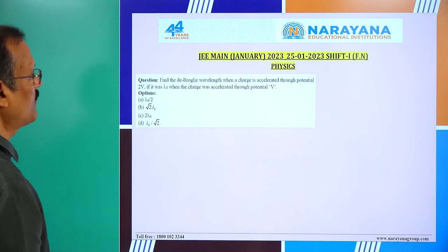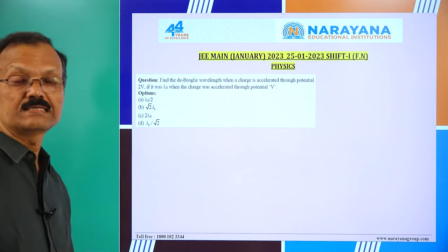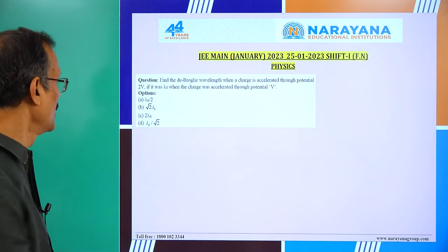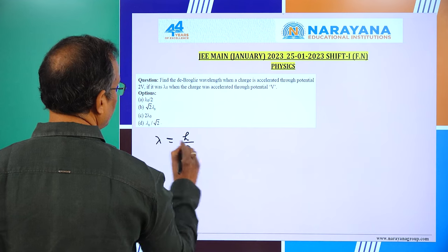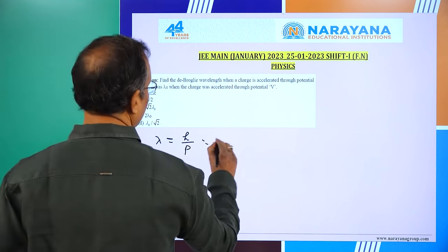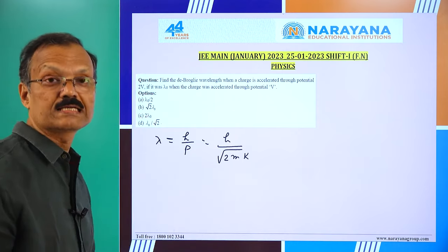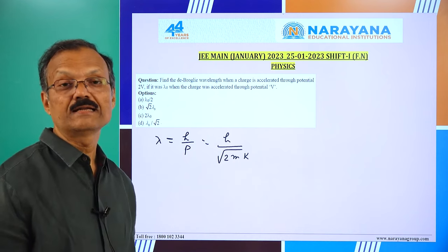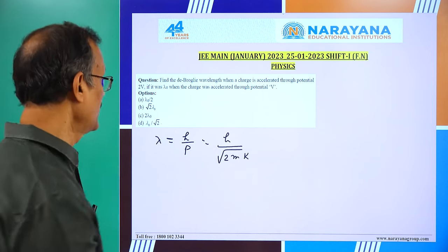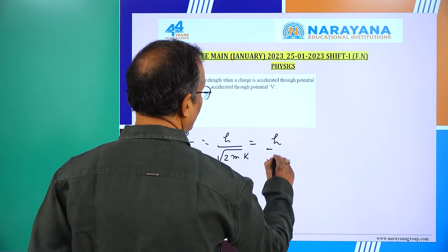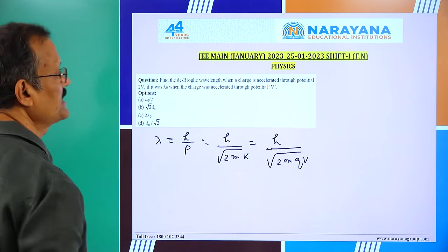First question: find the de Broglie wavelength when a charge is accelerated through potential 2V, given it was lambda naught when accelerated through V volts. The de Broglie wavelength lambda equals H by P, and P equals under root 2mK, where K is kinetic energy. For a charge particle accelerated by V volts, kinetic energy is QV. So lambda equals H by under root 2mQV.